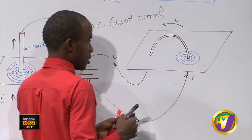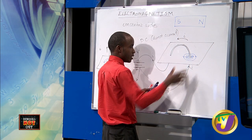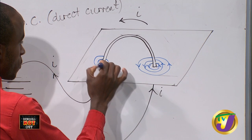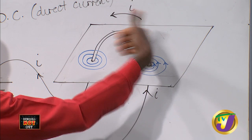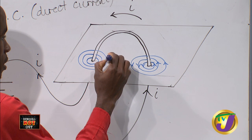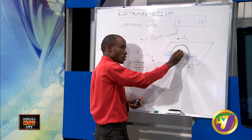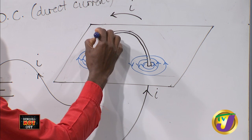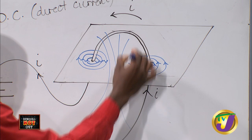The right-hand grip rule tells us what is happening. This section curls in and then goes out that way. When we draw concentric circles on both sides, you'd have them pointing this way and that way. When we have a situation where it's in a loop instead of a straight conductor, inside the circle itself, we have the magnetic field pointing in the same direction. What we have is a situation where all arrows point the same way.